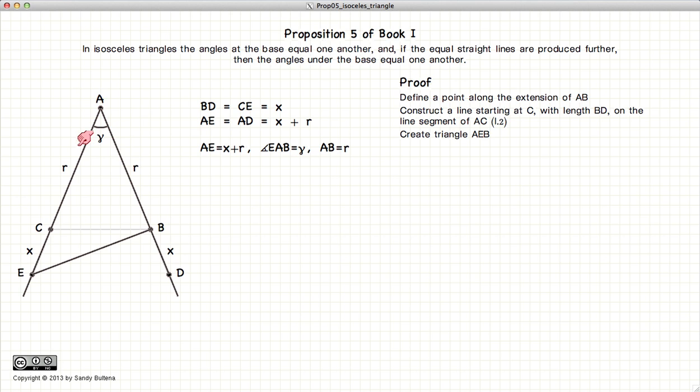which has the sides R and R plus X, with an angle alpha between the two. Now we'll construct ACD, which also has the sides R, R plus X, with the angle gamma between the two of them. According to Proposition 4, if you have a side angle side of two triangles that are equal, then the triangle is equal in all respects.